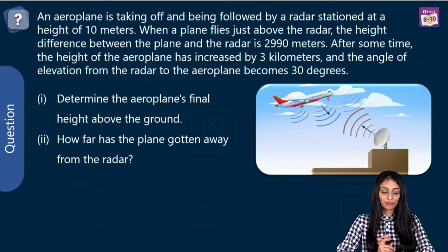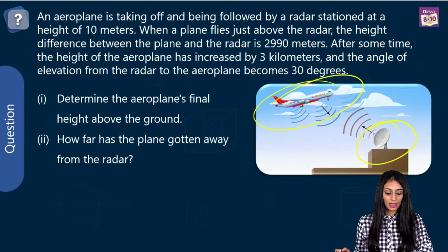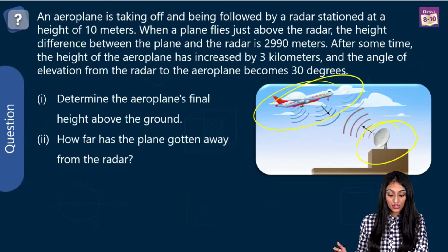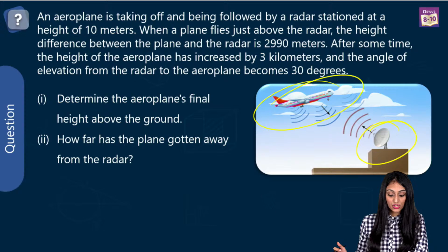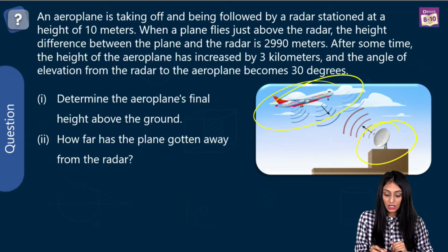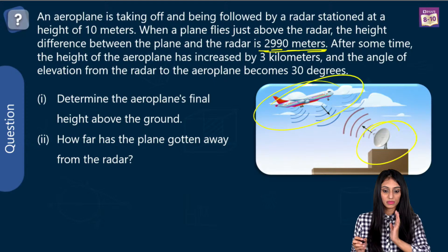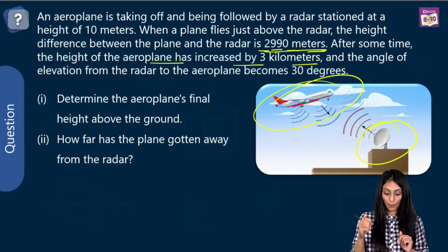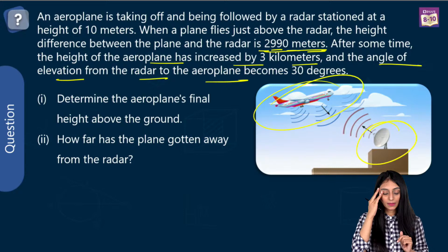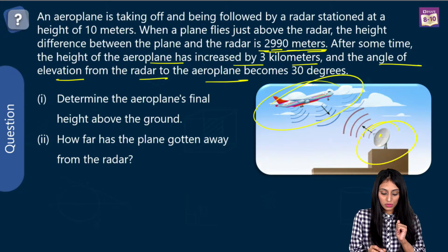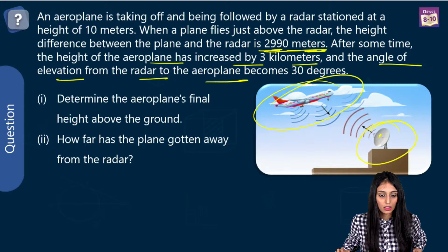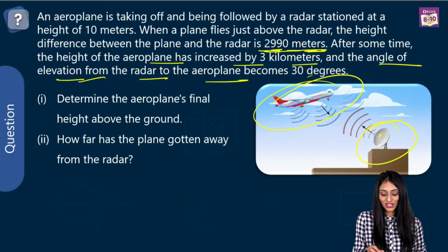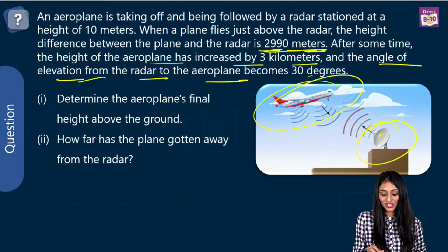Next question: an aeroplane is taking off and being followed by a radar stationed at a height of 10 meters. The distance between them is 10 meters. When the plane flies just above the radar, the height difference is 2,990 meters. After some time, the height of the aeroplane has increased by 3 kilometers, and the angle of elevation from the radar to the aeroplane is 30 degrees. Since elevation and degrees are mentioned, this is from the application of trigonometry.